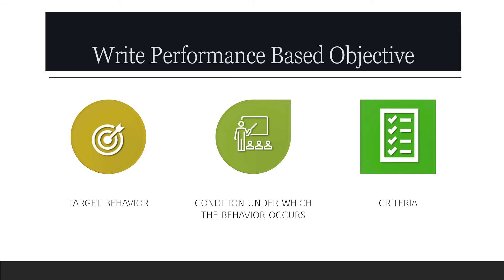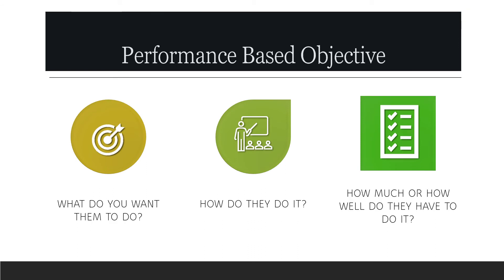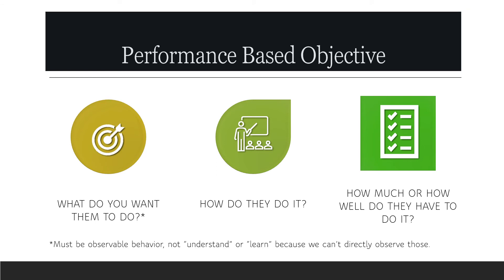Next, you're going to write your performance-based objective, and I want you to use a three-part objective format. First, you're going to identify the target behavior, then the condition under which that behavior occurs, and the criteria. In other words: what do you want them to do, how do they do it, and how much or how well do they have to do it? When thinking about what you want them to do, make sure you come up with an observable behavior — you may not use the terms 'understand' or 'learn,' because we can't directly observe those.